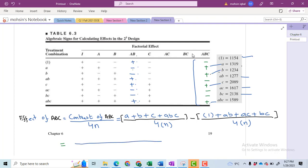Now in the second step, I will have to put the values for all these terms. These values have been picked up from the example question. So we have: A equals 1319 plus B equals 1234 plus C equals 2089 plus ABC equals 1589, and then divide by 4. I have told you in the previous part of this video that we have two replications.